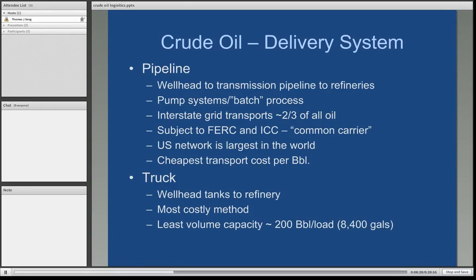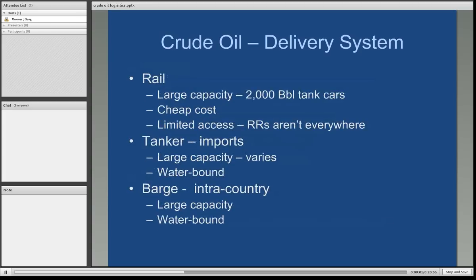Another method, where there is not immediate access to pipelines, is to use trucks at the crude oil well site. You'll see large tanks on the site holding the crude as it's pumped up from the ground until a truck can come and offload those tanks, delivering that crude oil to a pipeline or directly to a refinery. It is the most costly method and has the least volume capacity — each truck has approximately a capacity of 200 barrels per load, or 8,400 gallons, as each barrel of crude oil represents 42 gallons.